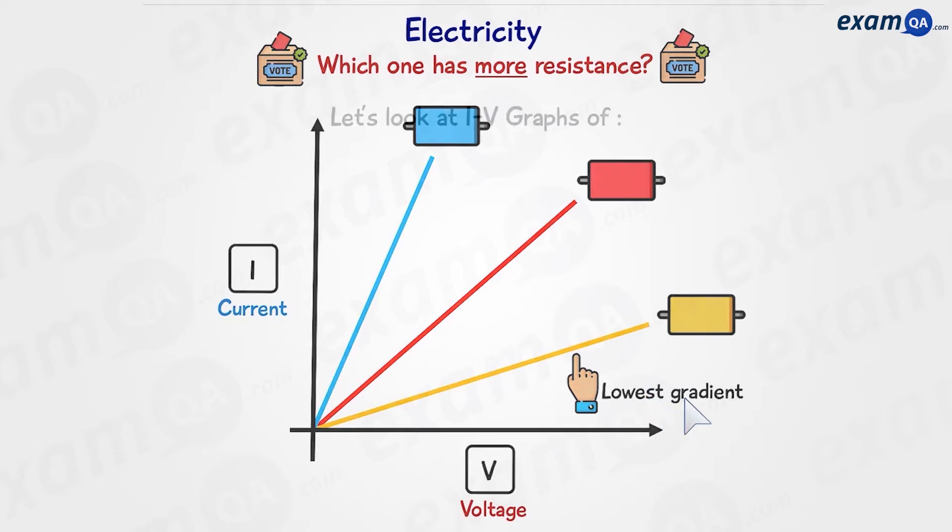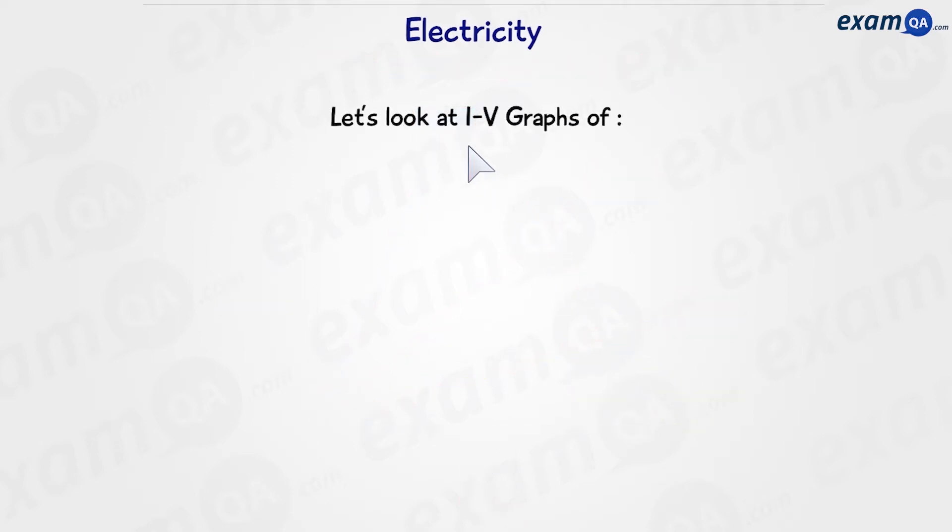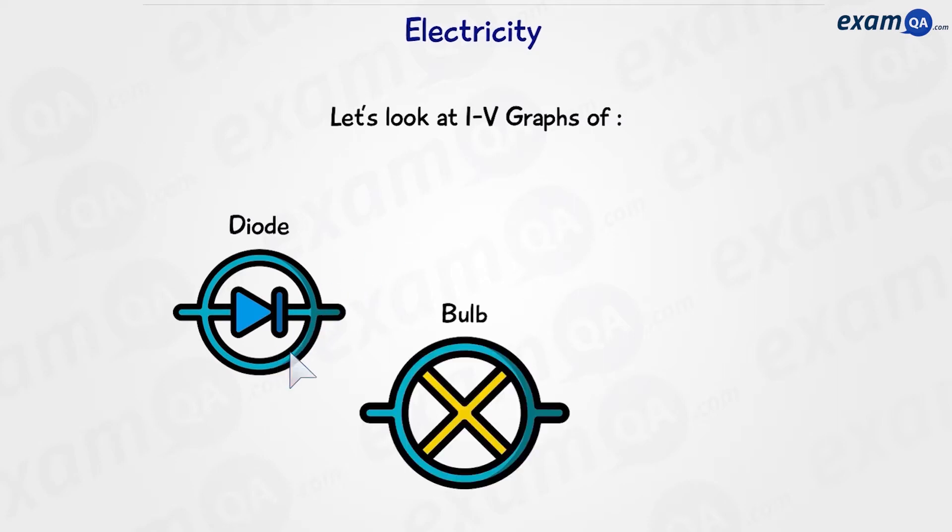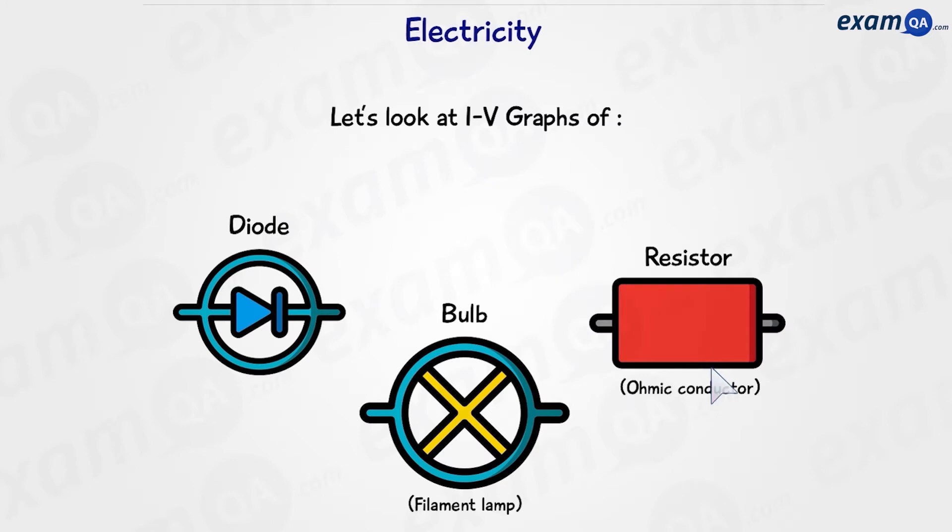So we're going to look at the IV graphs of three components: the diode, the bulb, which is also known as the filament lamp, and a standard resistor, which can also be called an ohmic conductor.